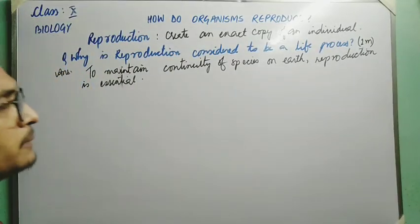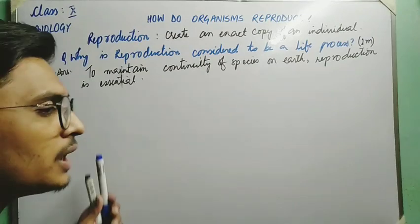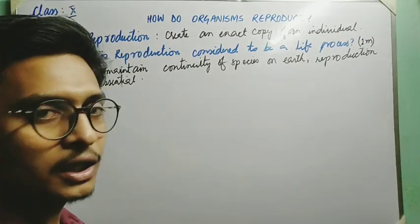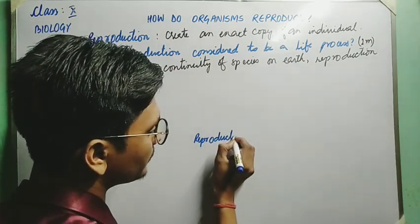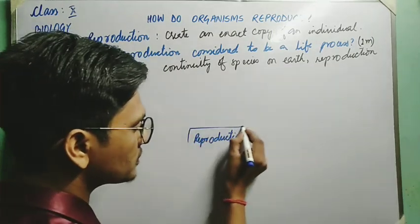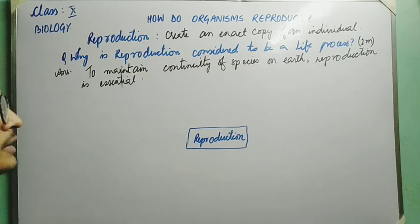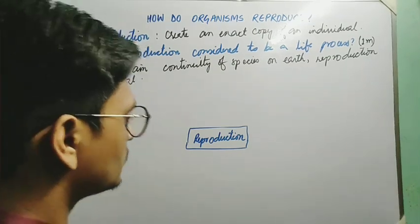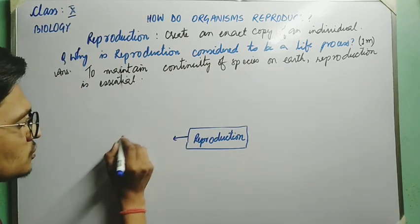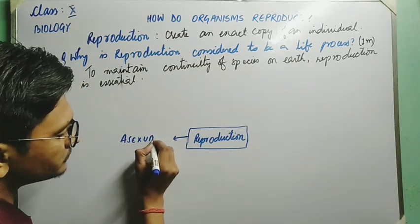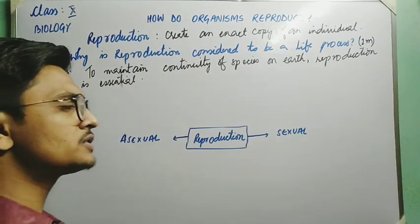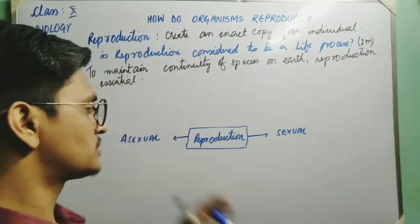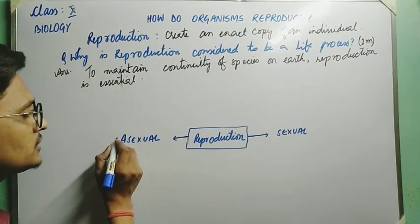Reproduction is of two types. In this chapter, we are going to discuss reproduction in two major portions: first, asexual reproduction, and second, sexual reproduction.